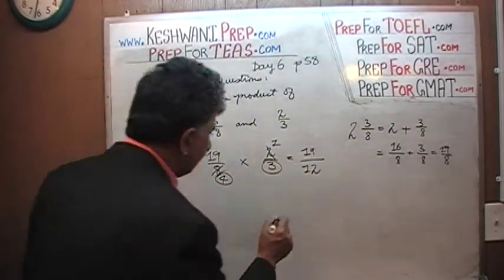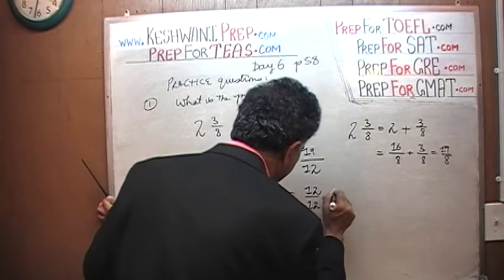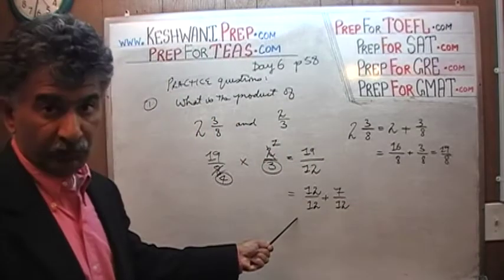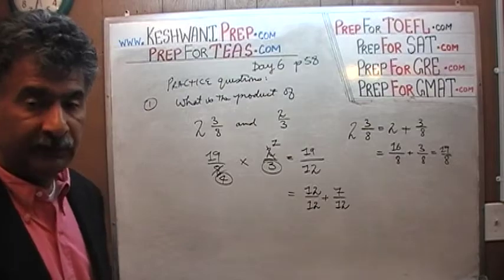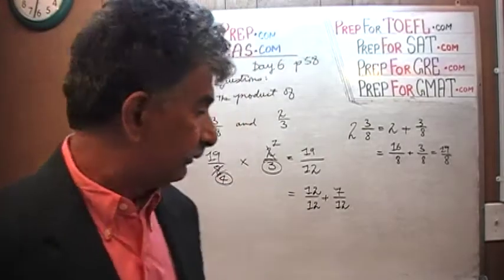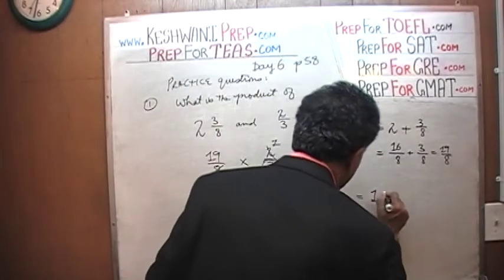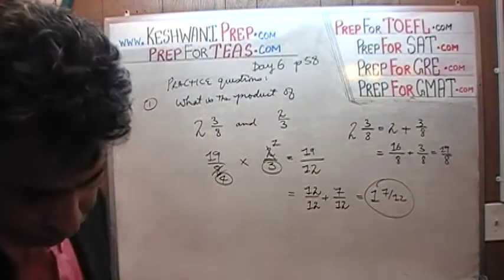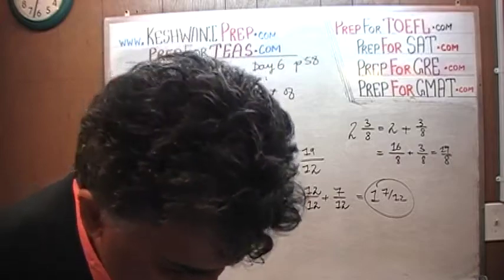On the bottom we get four times three, which is twelve. So we have nineteen over twelve. Nineteen over twelve can be written as twelve over twelve plus seven over twelve. Twelve over twelve is one, and one plus seven-twelfths gives us one and seven-twelfths — that is our answer for number one.